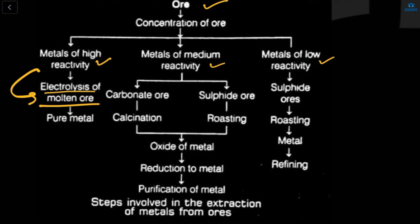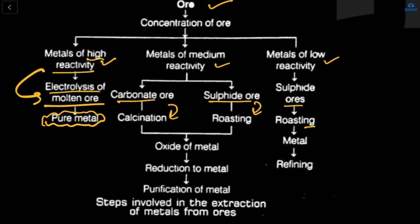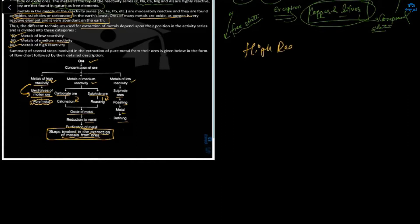Summary of extraction steps: metals of high reactivity — above hydrogen — require electrolysis of molten ore to get a pure metal. Metals of medium reactivity involve two ore types: carbonate ore (calcination) and sulfide ore (roasting). Metals of low reactivity involve roasting the sulfide ore, then refining to obtain a pure metal.